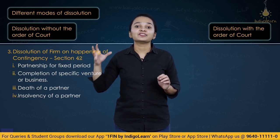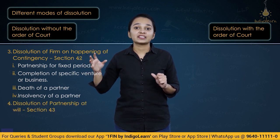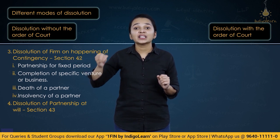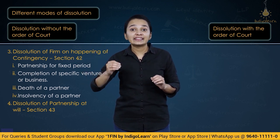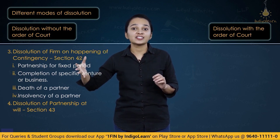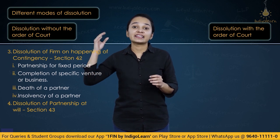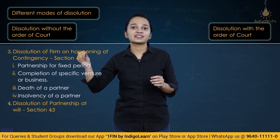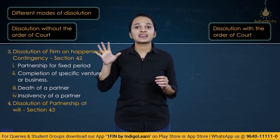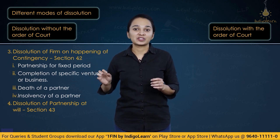Section 43 — dissolution of a partnership at will. A partnership at will can be dissolved at any time by a partner by giving notice in writing to all other partners of his intention to dissolve. If the notice mentions a date, that will be the date of dissolution. If no date is mentioned, the date of communication of the notice will be the date of dissolution.